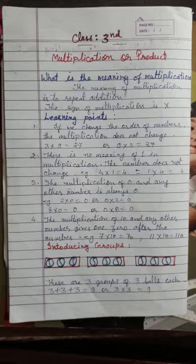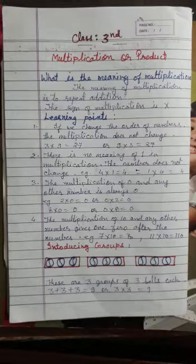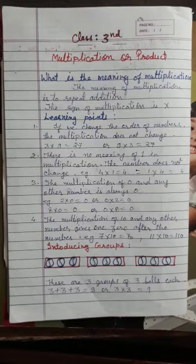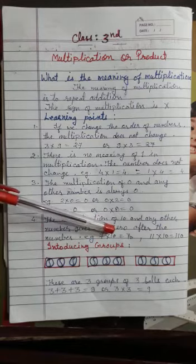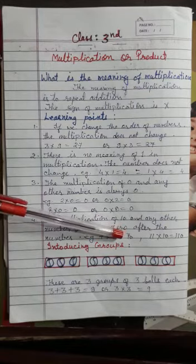The multiplication of 10 and any other number gives one zero after the number. If you multiply any number by 10, one zero gets added after that digit. Like if you multiply 7 by 10, you get 7 with one zero after it.